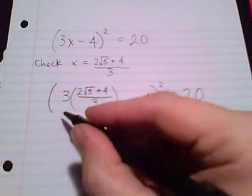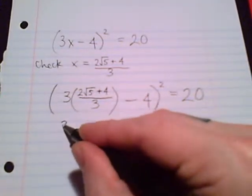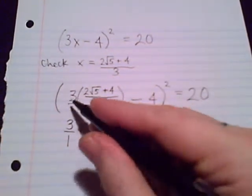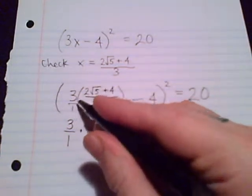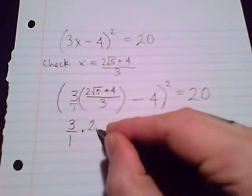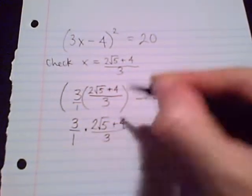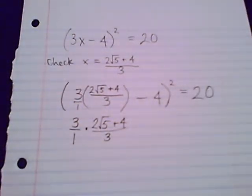3 times a big fraction. I could look at this in a couple of different ways. 3 over 1, right there, times. And I did that because there's a fraction. I need to multiply a number to a fraction. Make it look like a fraction: 3 over 1. And those 3's cancel.